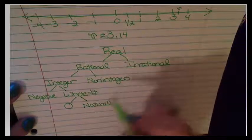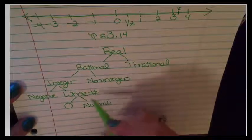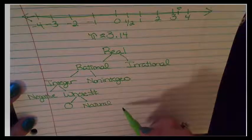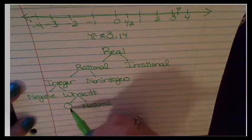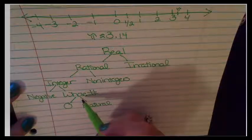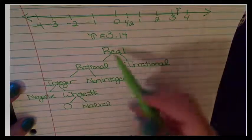Remember, the natural numbers were the ones one, two, three, four, and then if you add the number zero in, then you get the whole numbers. So this tree kind of helps you to discern that.